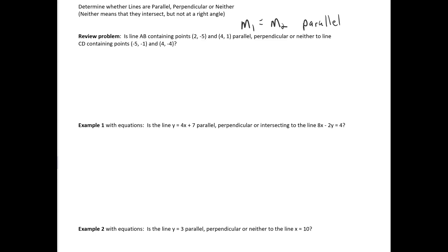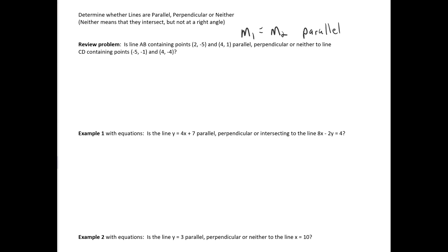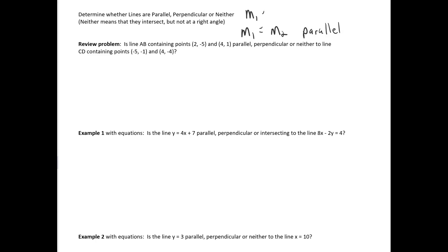And if M1 is the negative reciprocal of M2, in other words, if you can multiply M1 by M2 and get negative 1, then those lines will be perpendicular. If M1 times M2 equals negative 1, that means that the two slopes, they're negative reciprocals of each other.